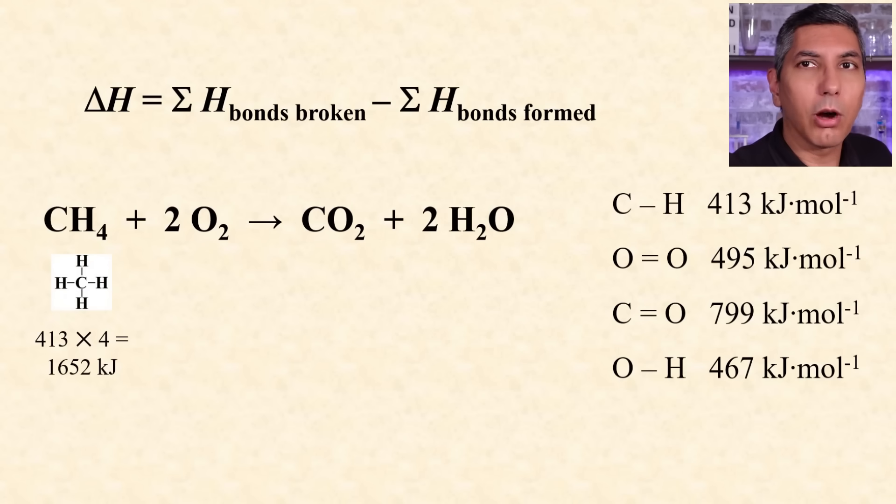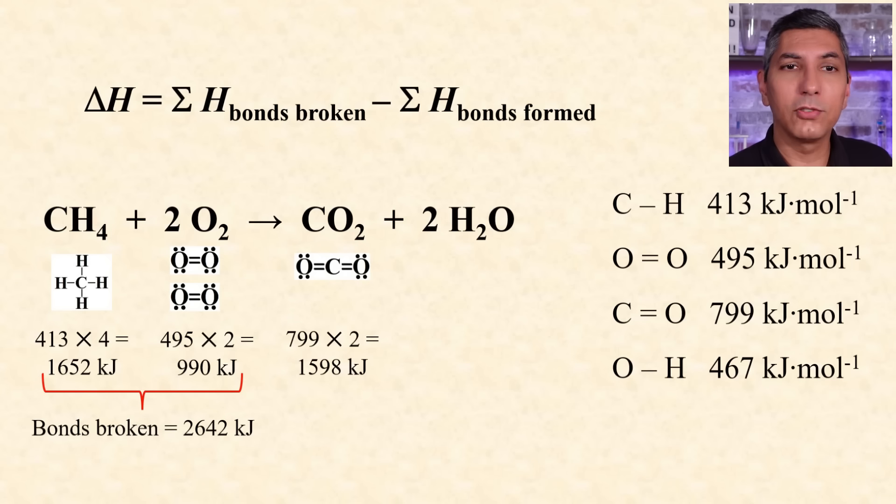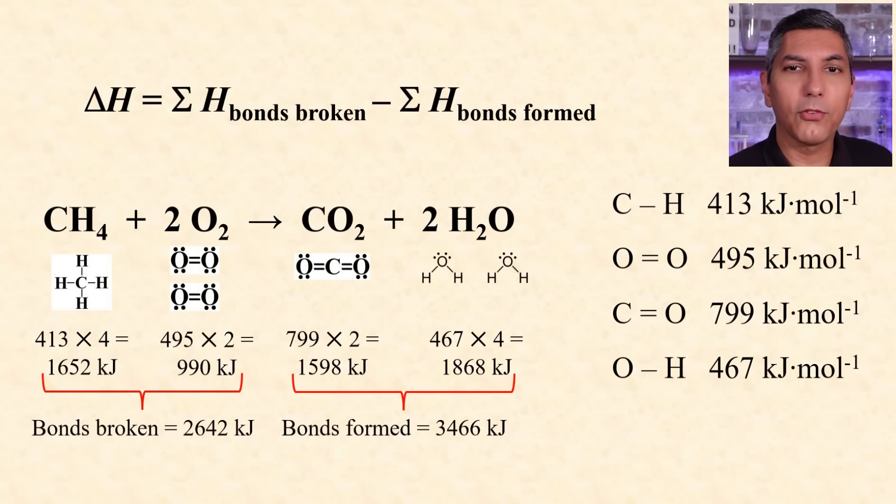So in this reaction, we take the four carbon hydrogen bonds and get 1652 and add that to two oxygen oxygen double bonds and get 990. So the total bonds broken would be 2642. Then we have two carbon oxygen double bonds for 1598 and four oxygen hydrogen single bonds for 1868. So the total energy of bonds formed is 3466 kilojoules.